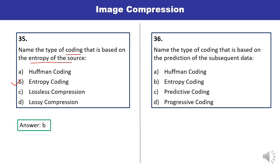Question 36: Name the type of coding that is based on the prediction of subsequent data. It is predictive coding. You must remember all these things — which type of coding is based on what. Answer for question 36 is C.